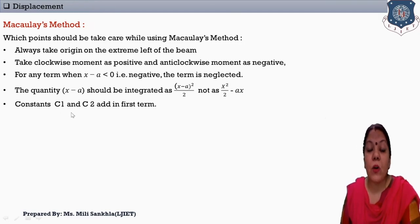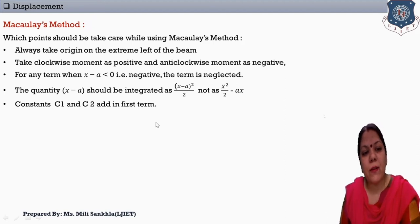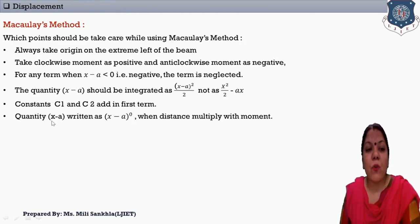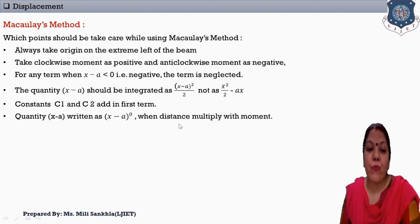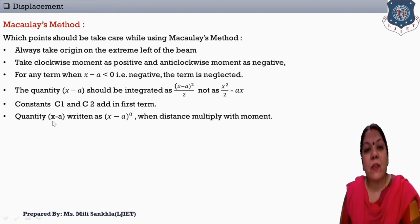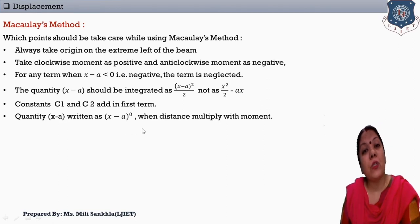The constants C1 and C2 are added in the first term. I will explain these constants at the time of calculation. Next, the quantity x minus a is written as x minus a raised to 0 when distance is multiplied with distance. If a moment is given on the span, the term x minus a is written as x minus a raised to 0 — this is particularly the case for moment.